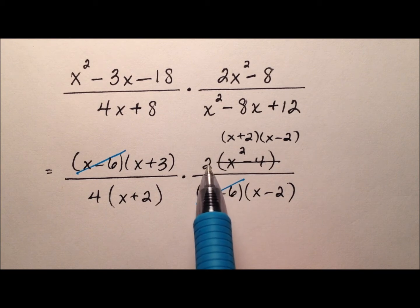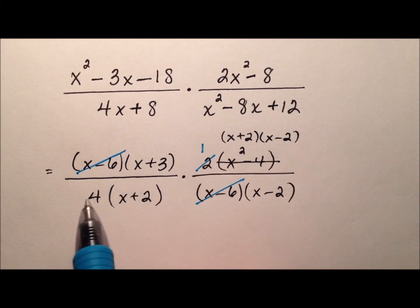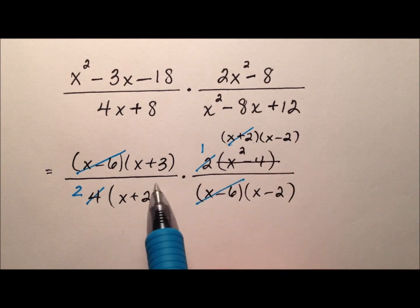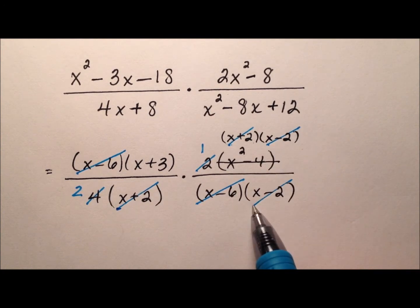Then I have a 2 right here. Looks like the 2 and the 4 can cancel—it'll make a 1 and a 2. And then my x + 2 can cancel here. And x - 2 can cancel here.